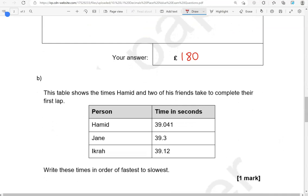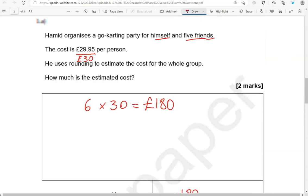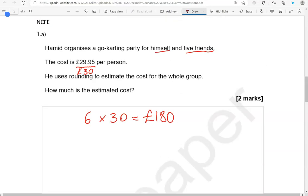This table shows the times Hamid and two of his friends take to complete their first lap because apparently they went go-karting.